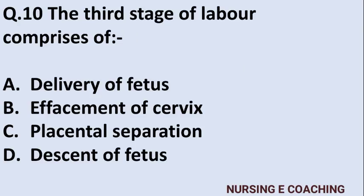Question 10: The third stage of labour comprises — Option A: delivery of fetus, Option B: effacement of cervix, Option C: placental separation, Option D: descent of fetus. Answer is C — placental separation. The third stage involves placental separation, while delivery of fetus occurs in the second stage.